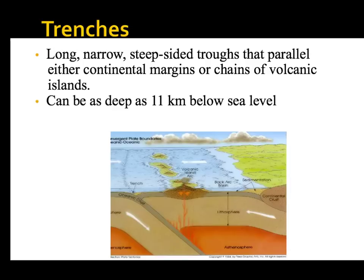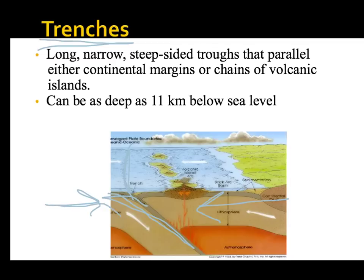A feature we should all be super familiar with is a trench. It's narrow and deep, caused by two plates converging. The more dense plate sinks, goes back into the hot mantle, and melts. Magma will rise, creating an island or sea mounts next to the trench. Trenches can be as deep as 11 kilometers below sea level.